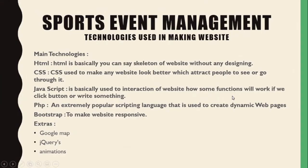Here you can see the technologies we used to build our website. The main technology is HTML, which is basically the skeleton of the website without any designing. After that we applied CSS to make the website look better and attract visitors. We also applied JavaScript for interaction — how functions work and what happens when a user clicks a button. Then we applied PHP, an extremely popular scripting language used to create dynamic web pages, which can be embedded with other languages like Java, C++, .NET, or HTML.